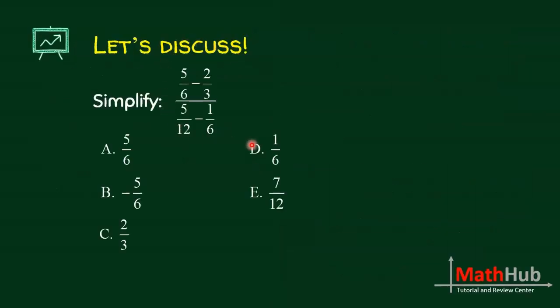We want to simplify this. This is an example of a complex fraction because the numerator is another fraction and the denominator as well. What you need to do here is to simplify the numerator and the denominator separately and then we will just combine.